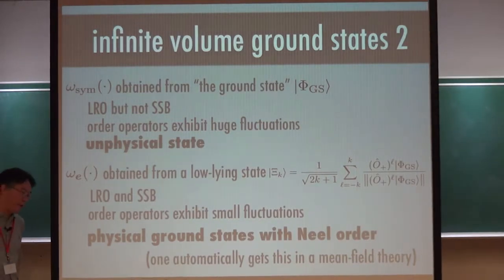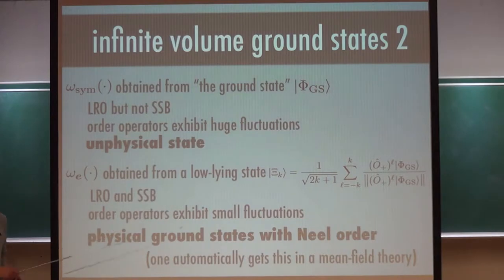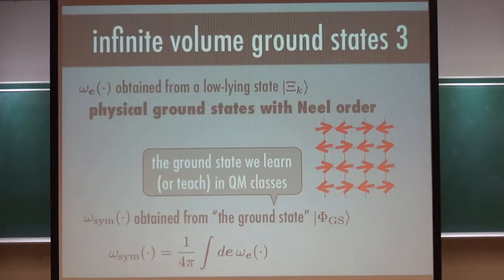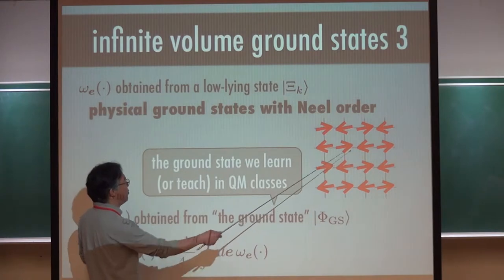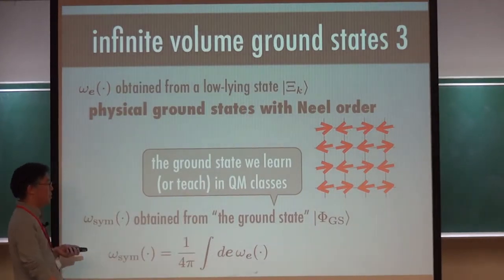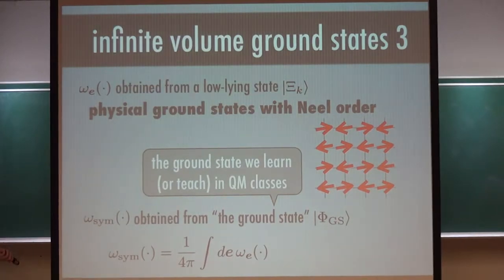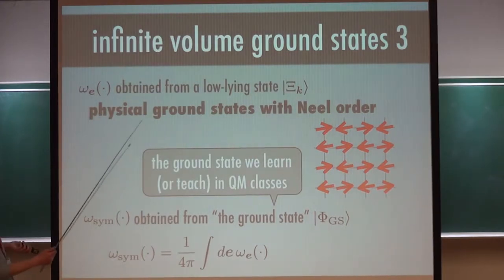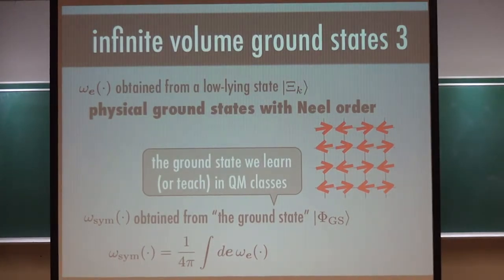Many people use mean-field calculations to solve this kind of inequality problem, and the miracle of mean-field theory is that you just jump to the omega-E kind of state. And omega-E obtained from the low-lying state looks natural — it has Néel order, so the spins point in alternating directions. Omega-sim came from the ground state but this turns out to be a mixture of these Néel order states integrated over all possible solid angles. Experimentalists just find the omega-E kind of state, not omega-sim.